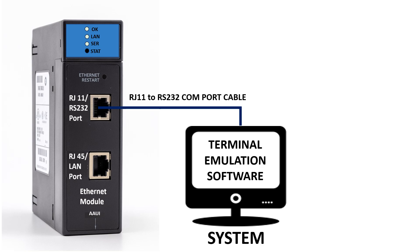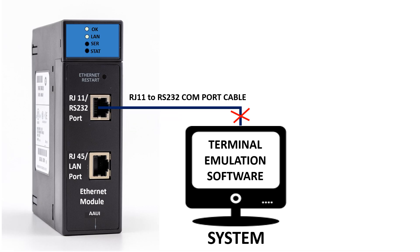The SCR light represents the station manager RS232 port status. The light is continuously on when the port is active and connected to a device. During data exchange, the light will blink. The SCR light will be off when there is no connectivity or a connection problem.